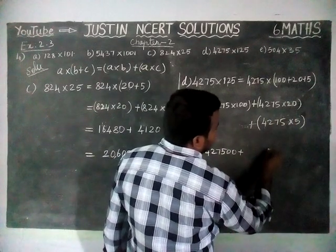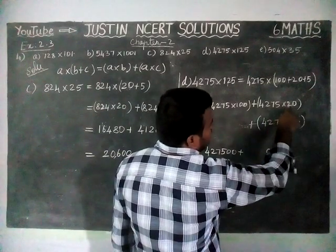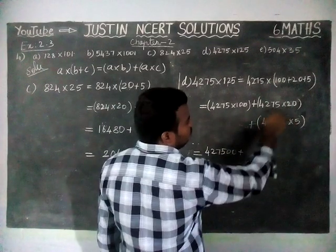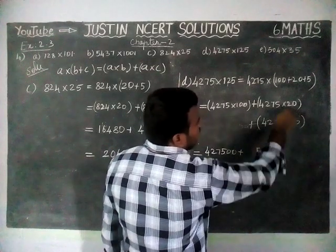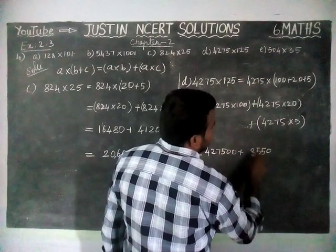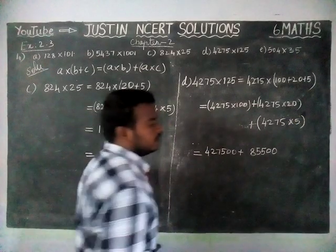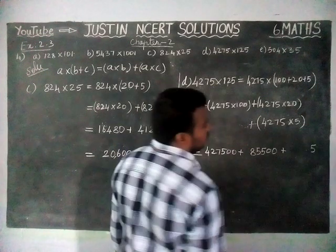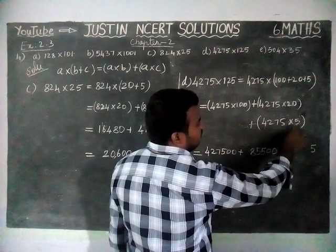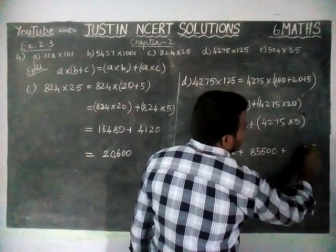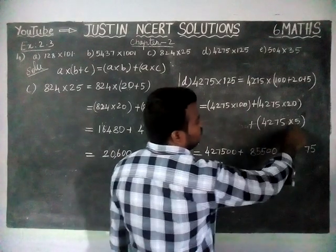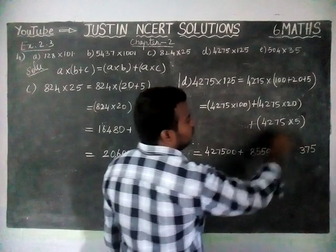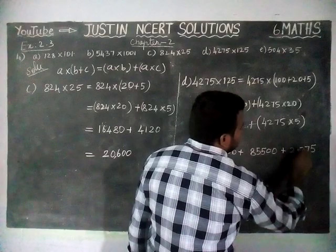For 4275 into 20: 2 5s are 10 remaining 1, 7 2s are 14, 14 plus 1 is equal to 15 remaining 1, 2 2s are 4, 4 plus 1 is equal to 5, and 4 2s are 8, with one 0 added. Now for 4275 into 5: 5 5s are 25 remaining 2, 7 5s are 35, 35 plus 2 is 37 remaining 3, 2 5s are 10, 10 plus 3 is 13 remaining 1, 4 5s are 20, 20 plus 1 is 21.